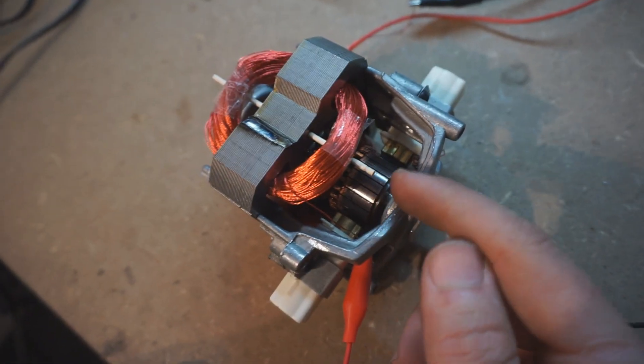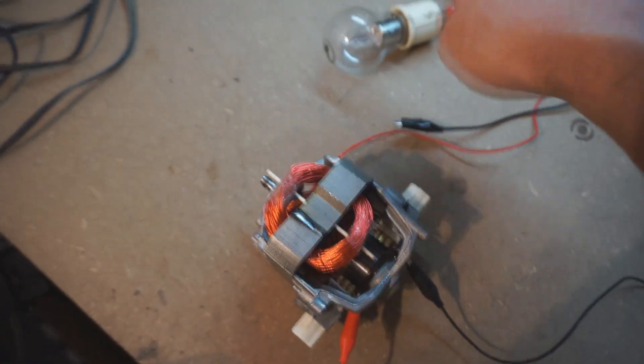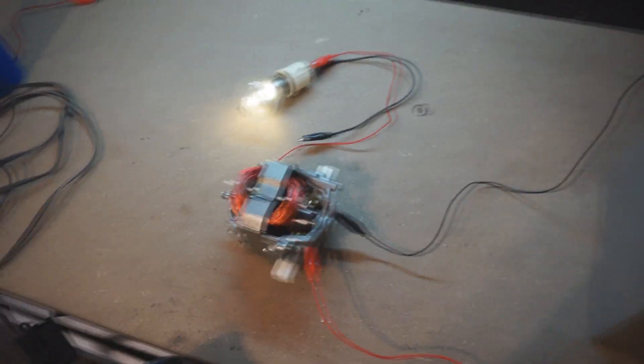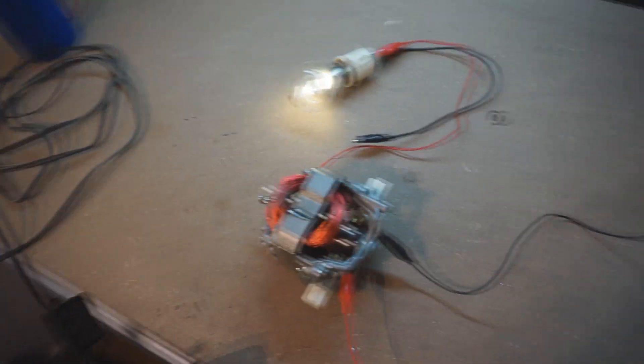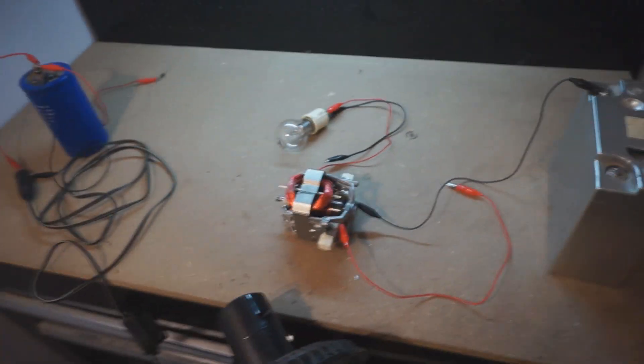I'm able to spin the motor here and have it function as a generator with these generator coils and then tap off those generator coils to light the light bulb up. You can see that works fine, lights right up. I did try one of these LED AC bulbs and that lights up as well.